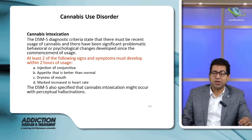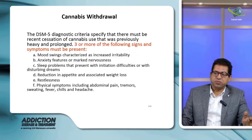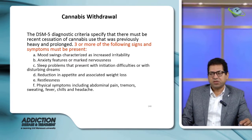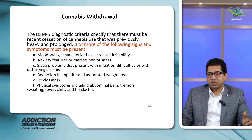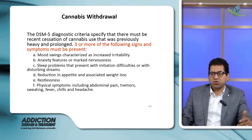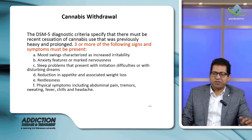When stopping cannabis, there are no significant physical symptoms but there are psychological symptoms. Cannabis withdrawal is characterized by three or more of the following: mood swings, irritability, anxiety, marked nervousness, sleep problems such as inability to initiate sleep or disturbing dreams, reduced appetite with weight loss, restlessness, and in some cases tremors and sweating.